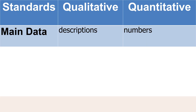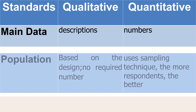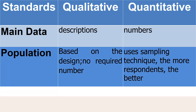Since we are through discussing the advantages and disadvantages of quantitative and qualitative research, let us move on to qualitative versus quantitative research. For the main data, under qualitative research, the main data is in the form of words or descriptions. Under quantitative research, on the other hand, it is in numbers and statistics format.